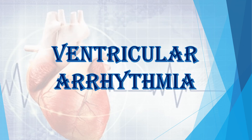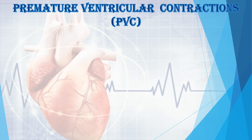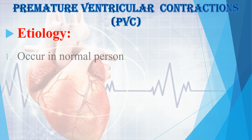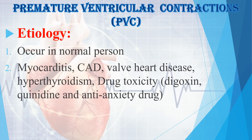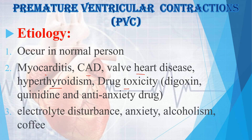The next category of arrhythmia is Ventricular Arrhythmia. The first is Premature Ventricular Contractions (PVC). The etiology: PVCs can occur even in normal persons due to triggering factors. Underlying pathological conditions include Myocarditis, Coronary Artery Disease, Valvular Heart Disease, Hypothyroidism, drug toxicity especially Digoxin and anti-anxiety drugs. Other causes include electrolyte disturbances, anxiety, alcoholism, and excessive coffee intake.